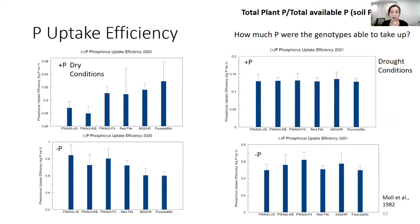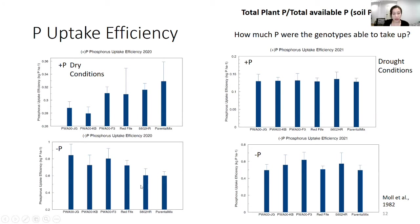First, we're going to talk about phosphorus uptake efficiency — the total plant phosphorus taken up per the total available phosphorus in the soil, including indigenous soil phosphorus and manure phosphorus. In dry conditions (2020), phosphorus uptake efficiency was much higher in the parents than the progeny, and the Red Fife landrace was quite variable. But in the no-manure treatment within the dry conditions, the farmer lines were a little more efficient in terms of uptake than the modern variety and more in line with Red Fife. We didn't have significant differences between any of the genotypes in any of the calculations. In the drought conditions (2021) with phosphorus added, we didn't really see any difference between the lines, and in the no-manure treatment, we also didn't see much difference in uptake.